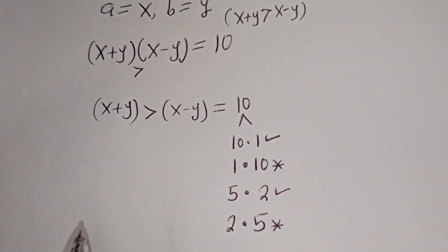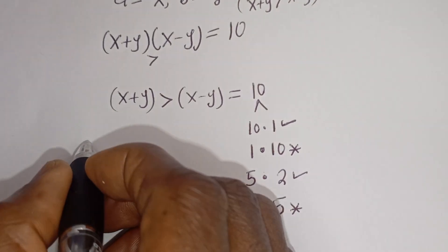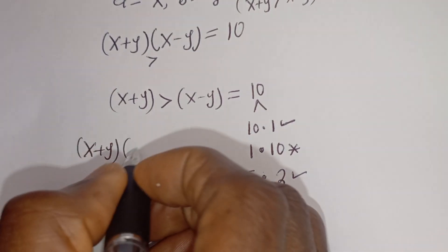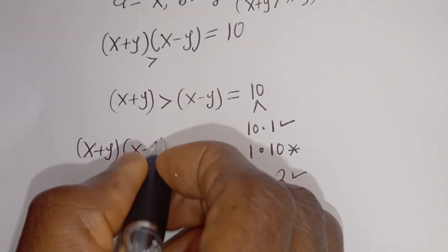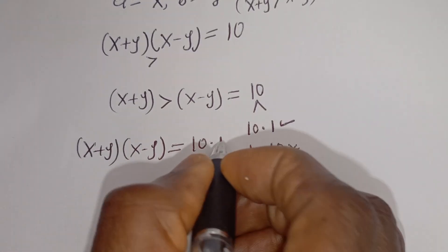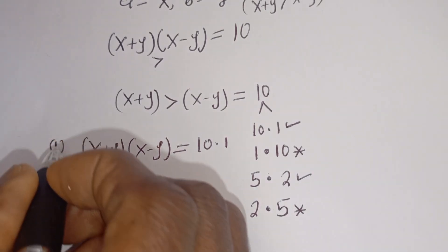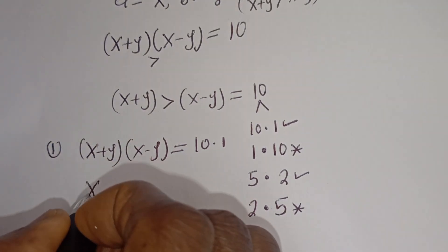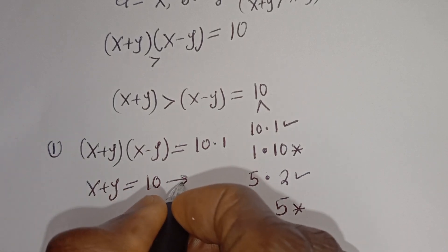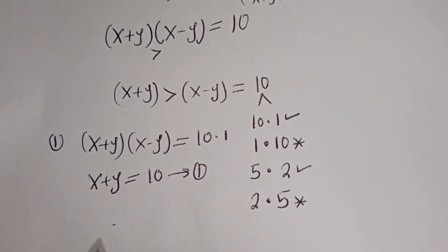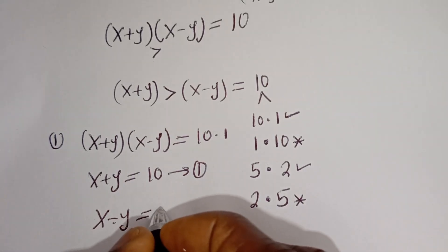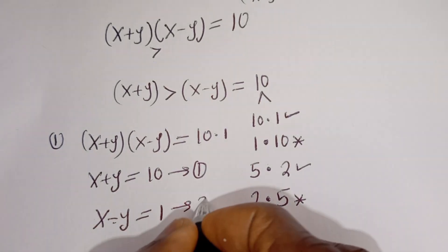We have two cases. Case 1: (X plus Y)(X minus Y) is equal to 10 multiplied by 1. This gives us X plus Y is equal to 10 — call this equation 1. And X minus Y is equal to 1 — call this equation 2.